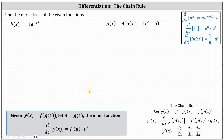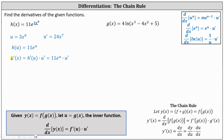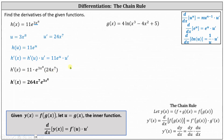Let's look at two more examples. I've included some additional derivative formulas on the right that include the chain rule. We have h of x equals 11e to the power of 3x to the eighth. Here u equals the exponent 3x to the eighth, and u prime equals 24x to the seventh. Writing h as a function of u, h of u equals 11e to the u, so h prime of x equals h prime of u times u prime, where h prime of u is 11e to the u, times u prime. Substituting, h prime of x equals 11 times e to the power of 3x to the eighth times 24x to the seventh, giving h prime of x equals 264x to the seventh times e to the power of 3x to the eighth.